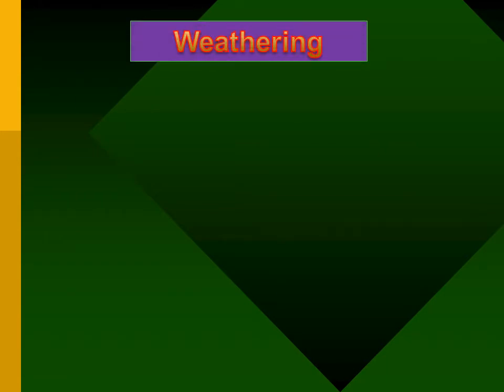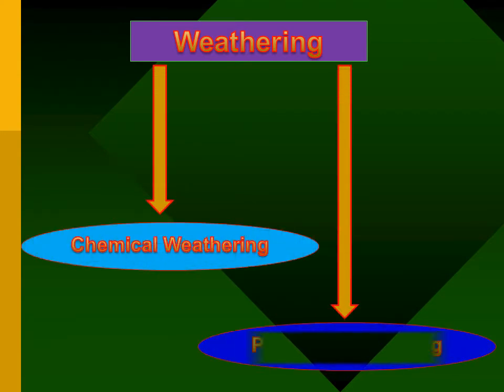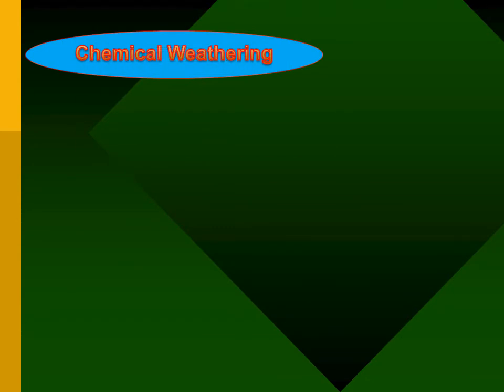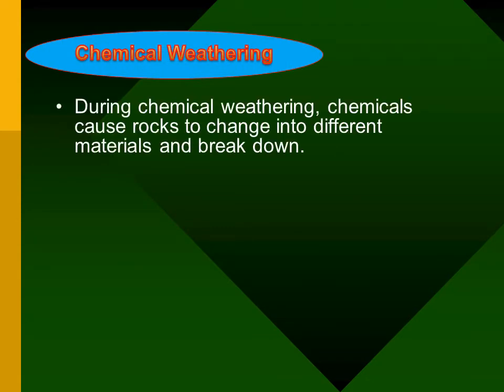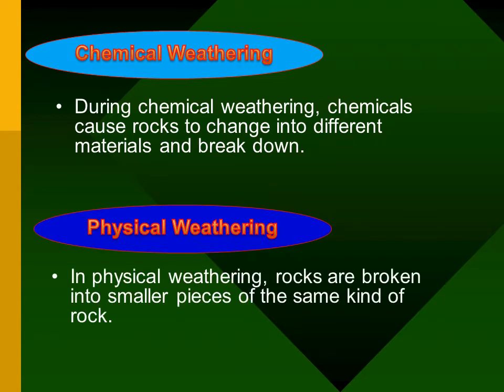There are two types of weathering: chemical weathering and physical weathering. During chemical weathering, chemicals cause rock to change into different materials and break down. For example, rainwater mixes with carbon dioxide in the air to form a weak acid. When it rains, the acid combines with the rock material to form a new chemical, and gradually that new chemical breaks down the rock.